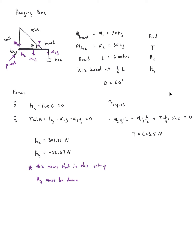Counterclockwise torques are positive and clockwise torques are negative. The weight of the board and the weight of the box both make the system rotate clockwise, so they're both negative. For the weight torques, the angle between the force and lever arm is 90°, so sine of 90 is just 1. The torque of the box is negative M2GL, and the torque of the board is negative M1G times L over 2, since the board's weight acts at its center. Then we have the torque due to tension: T times its lever arm times sine of the angle between them.